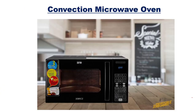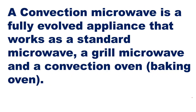The third type is the convection microwave oven, which is a fully evolved appliance. It works as a standard microwave for heating, a grill microwave for grilling, and a convection oven for baking. So it can perform heating, grilling, and baking — making it the most versatile of the three types.